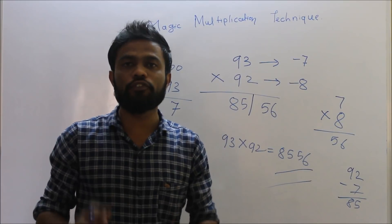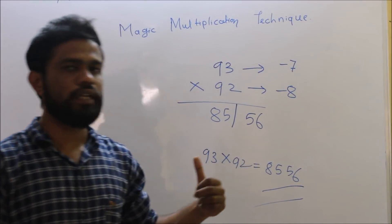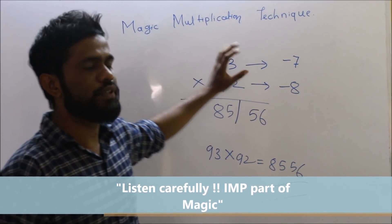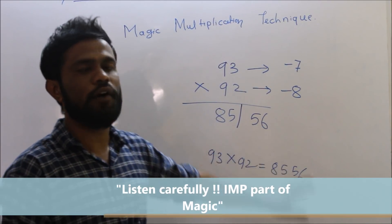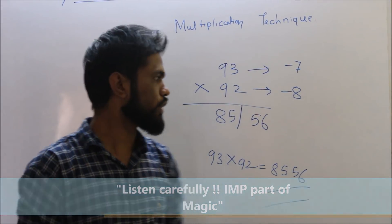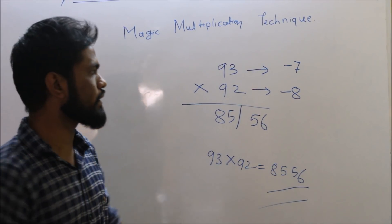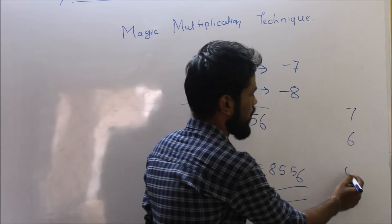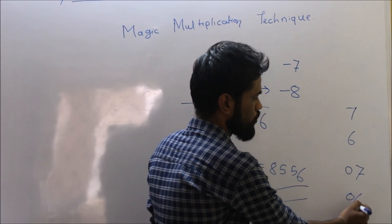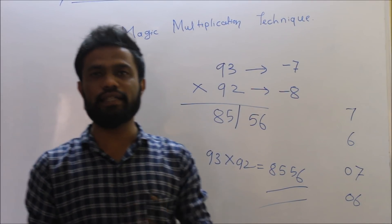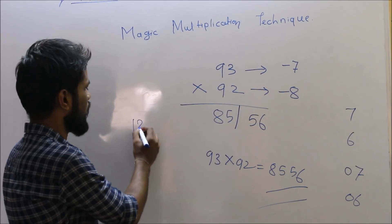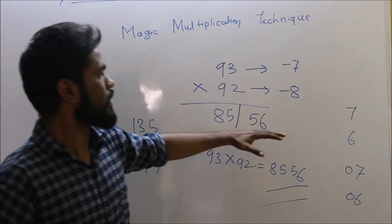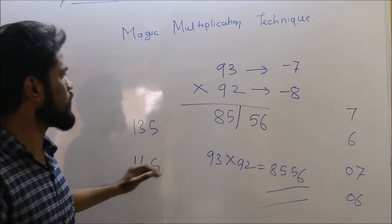Watch this video carefully and try to understand each step. When doing multiplication of a two-digit number and comparing with one hundred, the answer in the last compartment must be two digits. If you get a single-digit answer like seven or six, write it as zero-seven or zero-six. If you get a three-digit answer like one hundred thirty-five, write only the last two digits in the compartment and carry the first digit over.